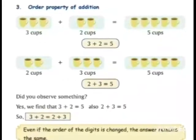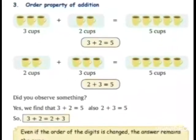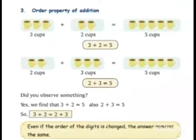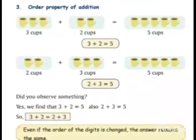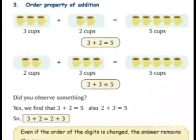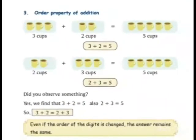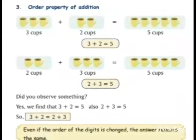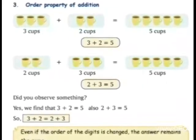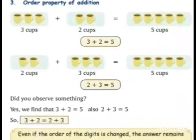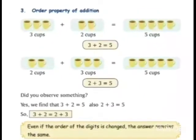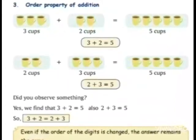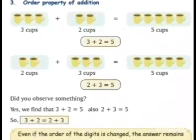Now see the second one — count the first box: one, two. So how many cups? Two cups. Plus now count the second box: one, two, three. How many cups? Three cups. Is equal to — now count the third box: one, two, three, four, five. So how many cups? Five cups. It means two plus three is equal to five.